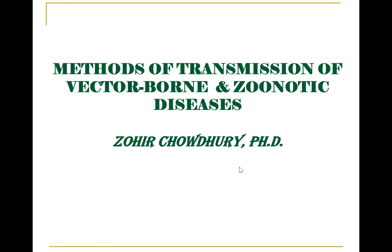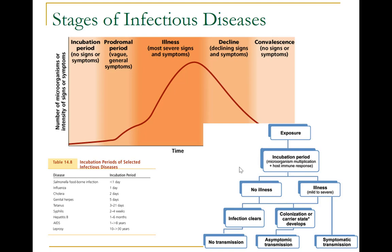My name is Zohri Choudhury, and today's topic is about methods of transmission of vector-borne and zoonotic diseases. The five stages or phases or periods of disease include the incubation, prodromal, illness, decline, and convalescence periods. The incubation period occurs in an acute disease after the initial entry of the pathogen into the host. It is during this time the pathogen begins multiplying in the host; however, there are insufficient numbers of pathogens present to cause signs and symptoms of disease.